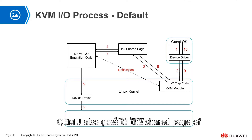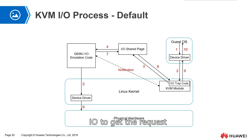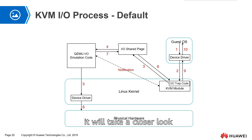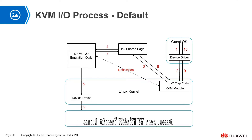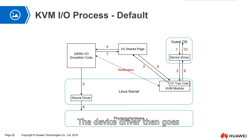At the same time, it tells QEMU that we have an IO request for processing here. Then QEMU also goes to the share page to get the request. After getting it, it will take a close look at what the IO request should do. Then it simulates according to the IO request, and sends a request to the real device driver.